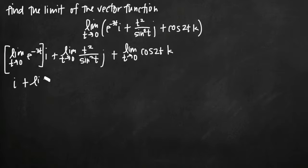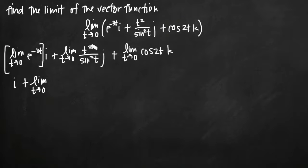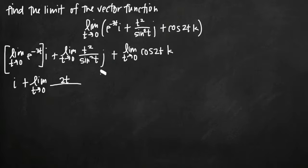In order to use L'Hôpital's rule, we say the limit as t goes to zero and take the derivative of our numerator. The derivative of t squared is 2t, so we replace t squared with 2t in our numerator. Then we do the same thing in our denominator — we take the derivative of sine squared of t and replace it with its derivative.